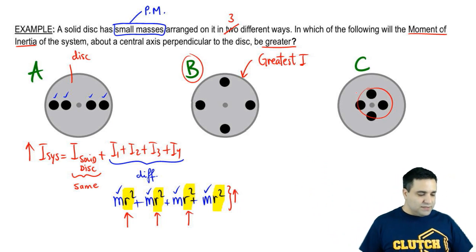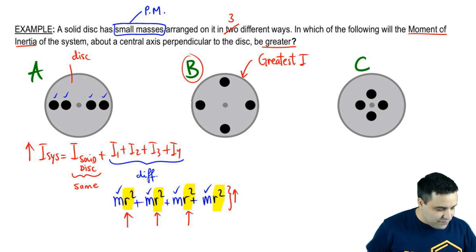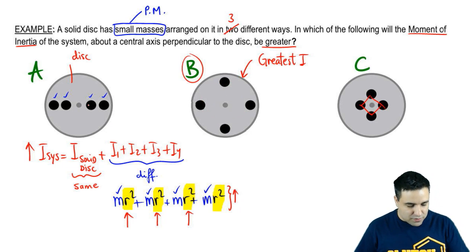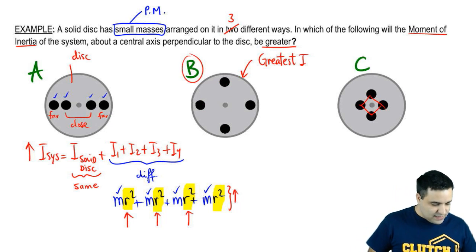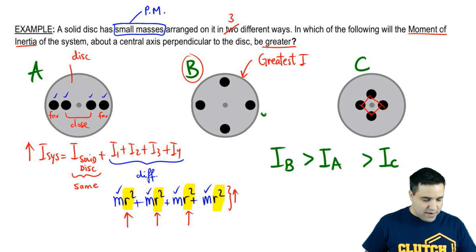And that's because the masses are farther out from the center. C is the smallest, the lowest value of I, because the masses are congregated in the middle. Here you can see four masses really close to the center. Here you see four masses really far from the center. And this guy is somewhere in the middle. Two are far and two are close. So I'm going to say that the moment of inertia of B is the greatest, and the moment of inertia of C is the smallest. So greatest, smallest, and A is in the middle.